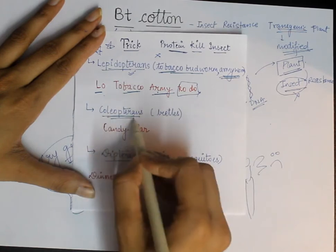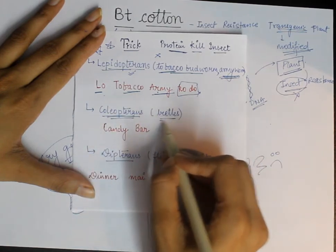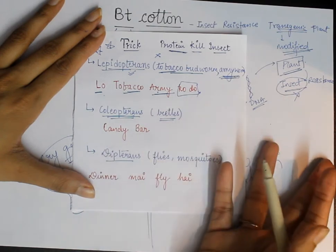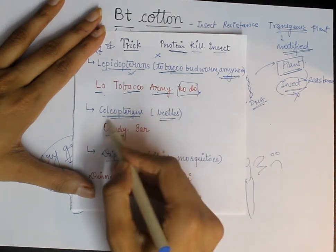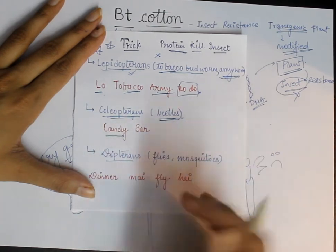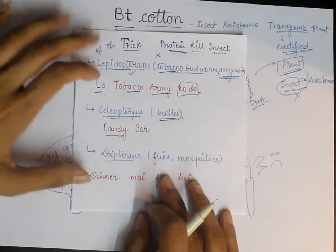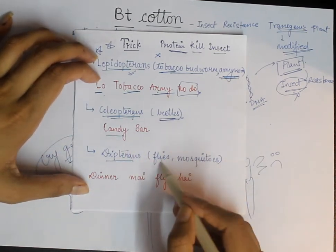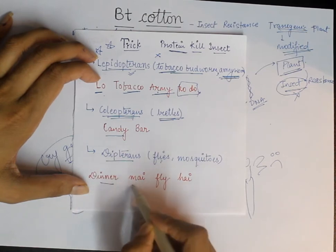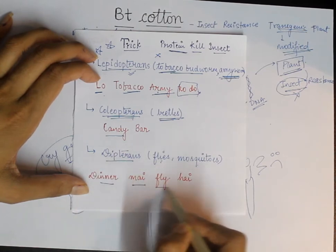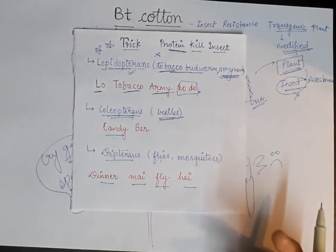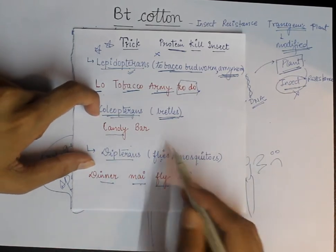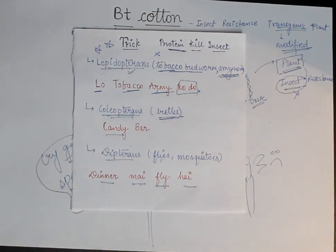What are Coleopterans? Coleopterans are Beetles. Easy mnemonic: Candy Bar — Coleopterans and Bar with Beetles. Next are Dipterans — Mosquitoes and Flies. A simple mnemonic: there is a fly in dinner — from 'dinner,' think Dipterans, Mosquitoes and Flies. Very easy mnemonics to remember these insect orders.